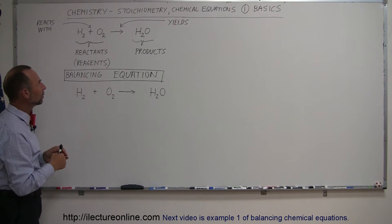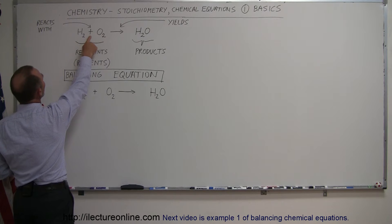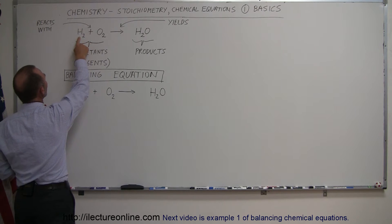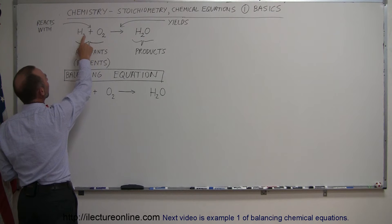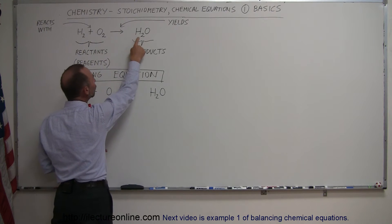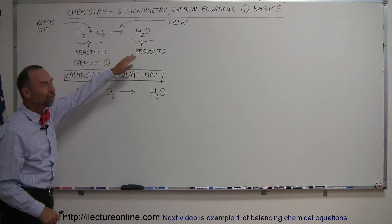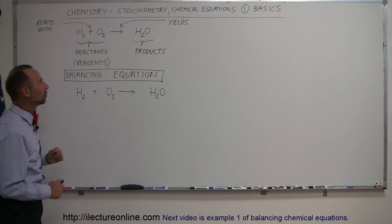So those are called chemical equations. We start with some reactants. This plus sign simply means that the first one reacts with the second one. In other words, hydrogen gas reacts with oxygen gas to yield H2O, of course we know that to be water. Now notice that this equation is not yet balanced. We'll learn how to balance them in just a little while.